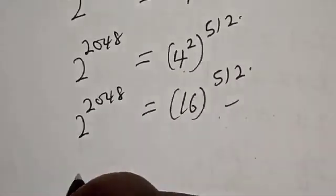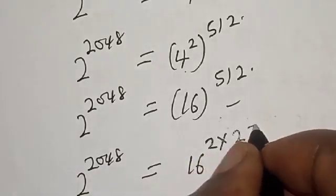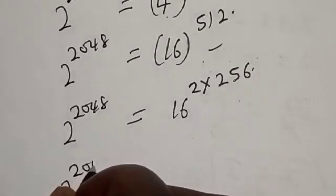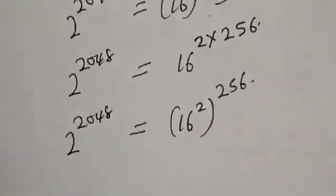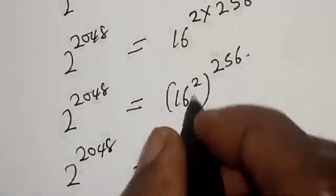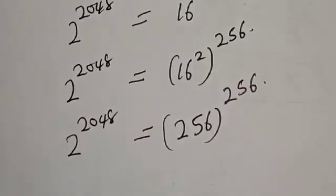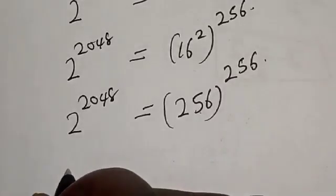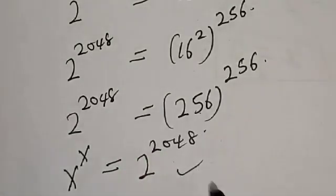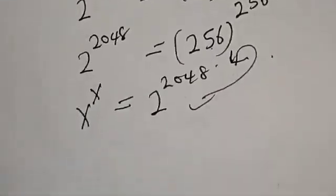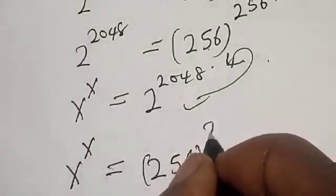Continuing, 2 raised to power 2048 is equal to 16 raised to power 2 multiplied by 256, then 2 raised to power 2048 is equal to 16 squared raised to power 256. Now 16 squared is 256, so 2 raised to power 2048 is equal to 256 raised to power 256. We now have 256 in both the base and the exponent. Recalling that s raised to power s is equal to 2 raised to power 2048, we substitute to get s raised to power s is equal to 256 raised to power 256.